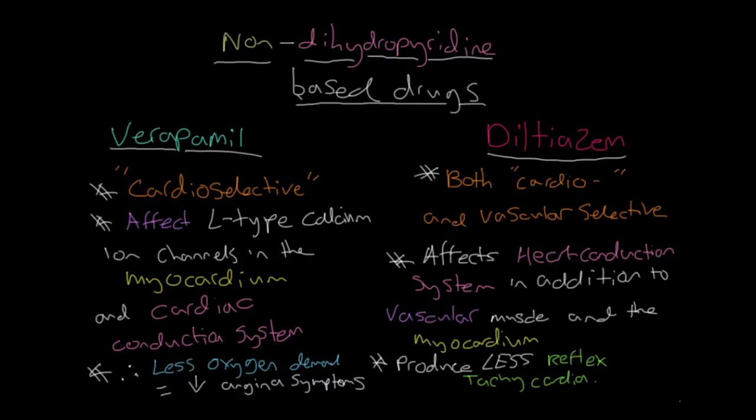The adverse effects of calcium channel blockers are usually related to too much of the desired effect, in addition to occurring secondary to the physiological mechanism that the body sets up to counteract the drug. This includes reflex tachycardias.